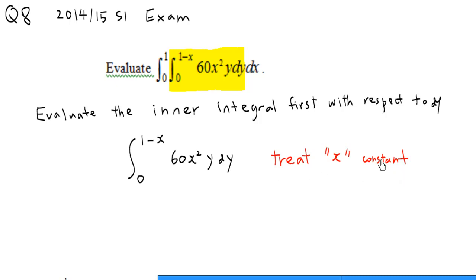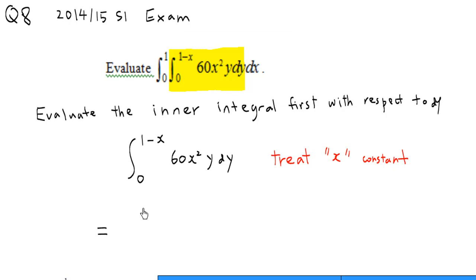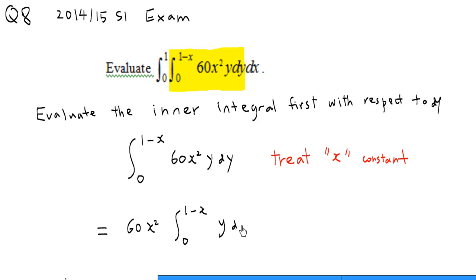Since x is constant, you take out all the constants, which include 60 and x², and now you integrate y from 0 to 1 minus x with respect to y.